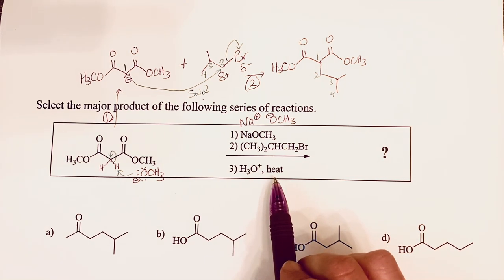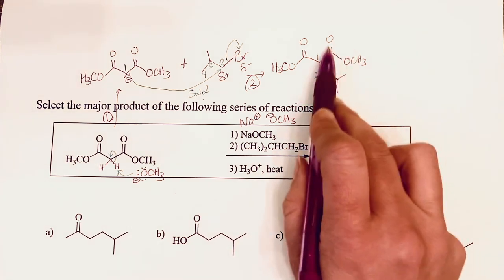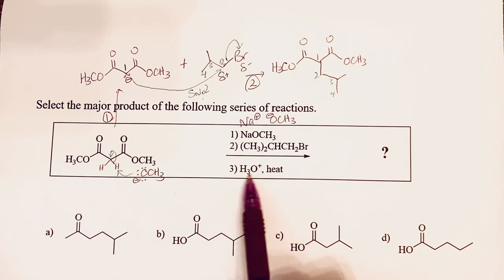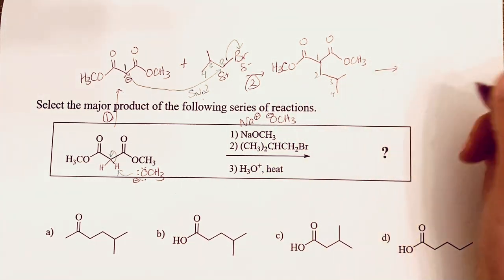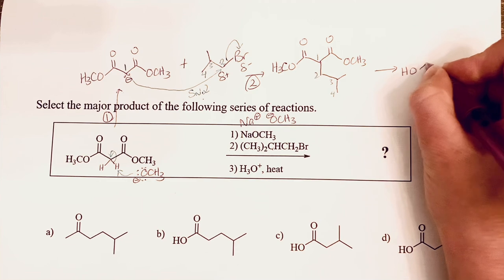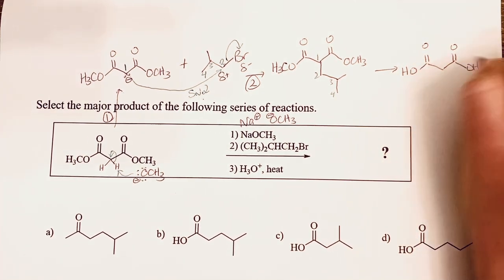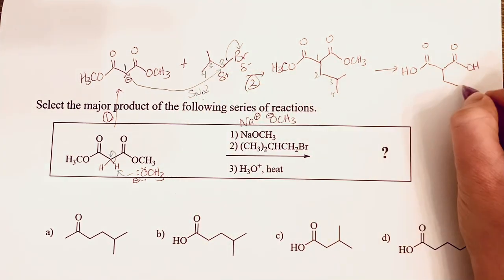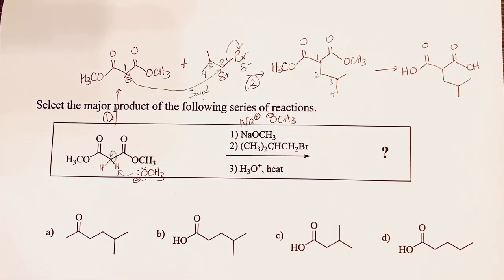Now in the third step we've got aqueous acid and heat. We saw in a previous chapter that carboxylic acid derivatives like esters can be hydrolyzed under these conditions to give you carboxylic acids. In this third step, the first thing that's going to happen is we're going to hydrolyze both of these esters to carboxylic acids. So I've got the two carboxylic acids and the chain that I added with this SN2 reaction.